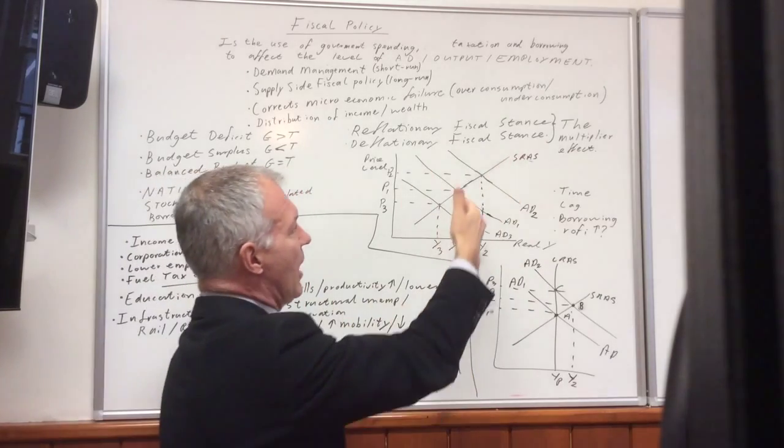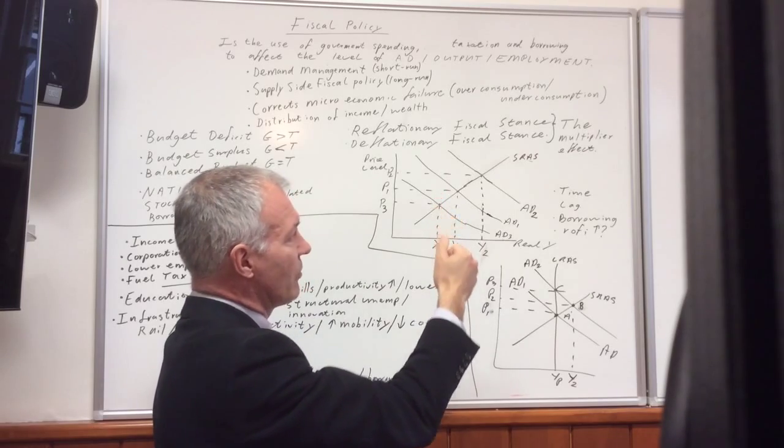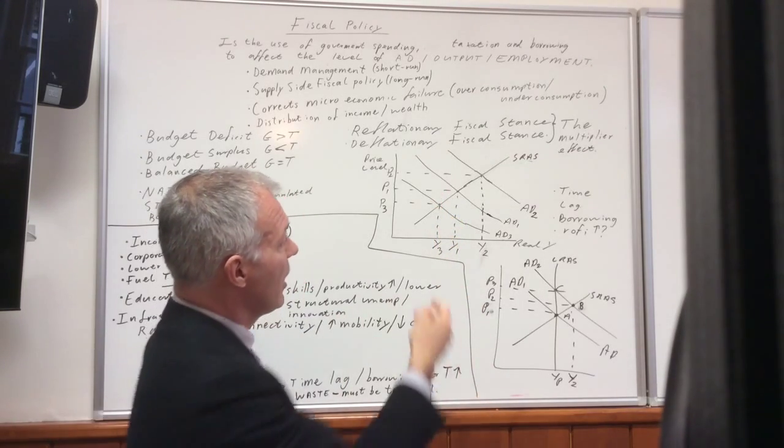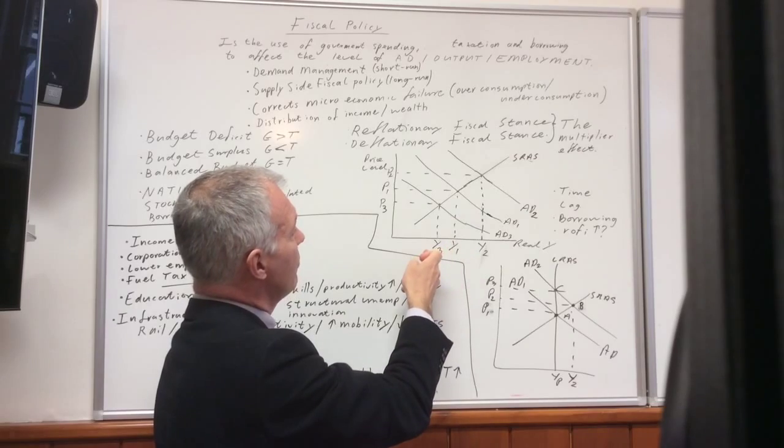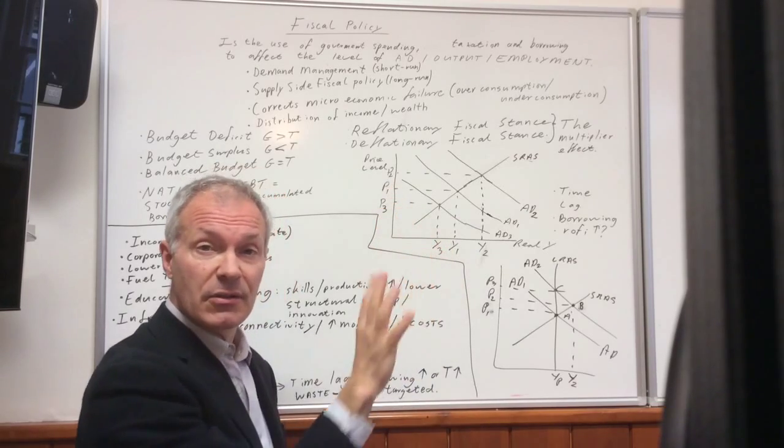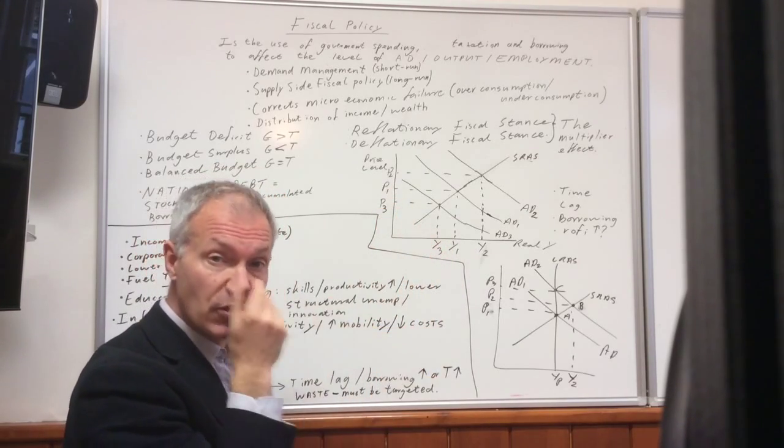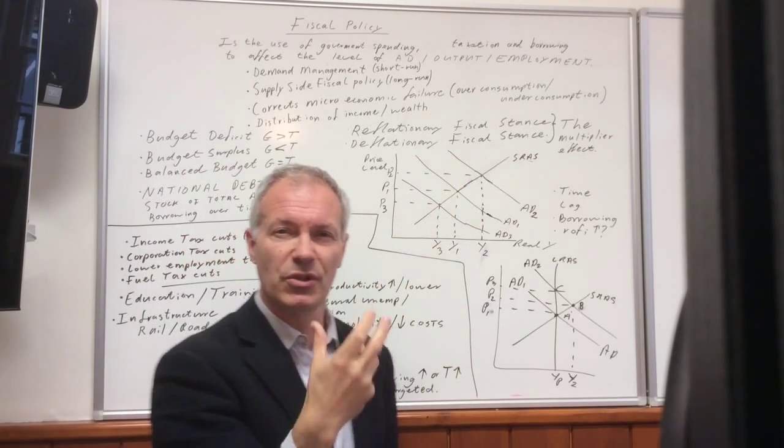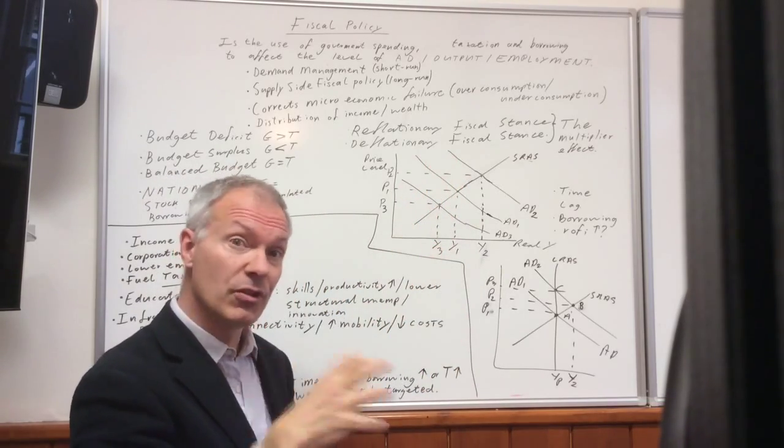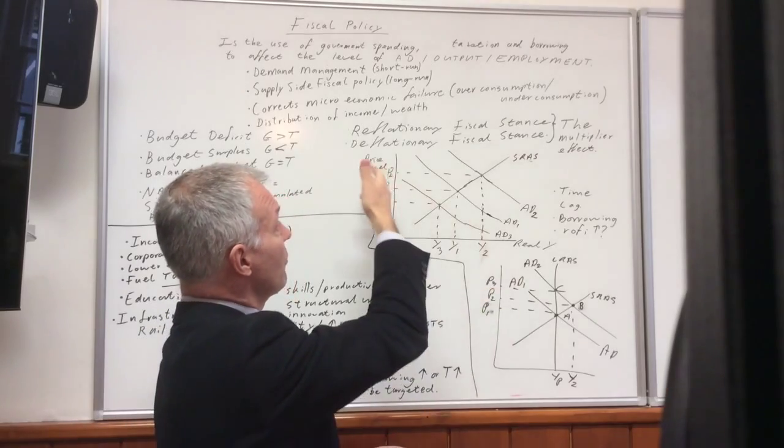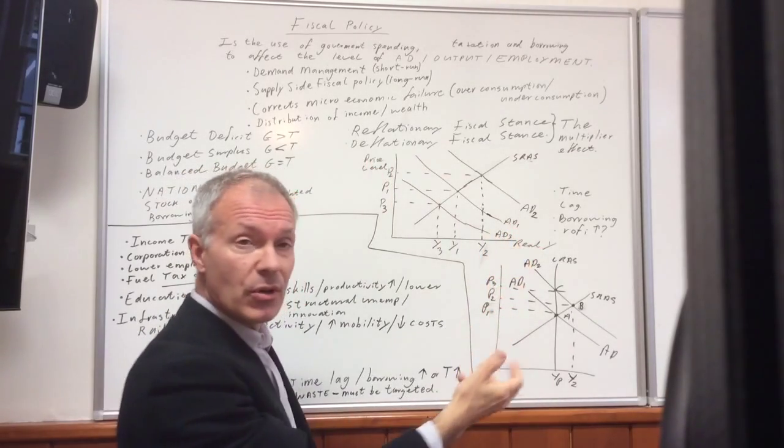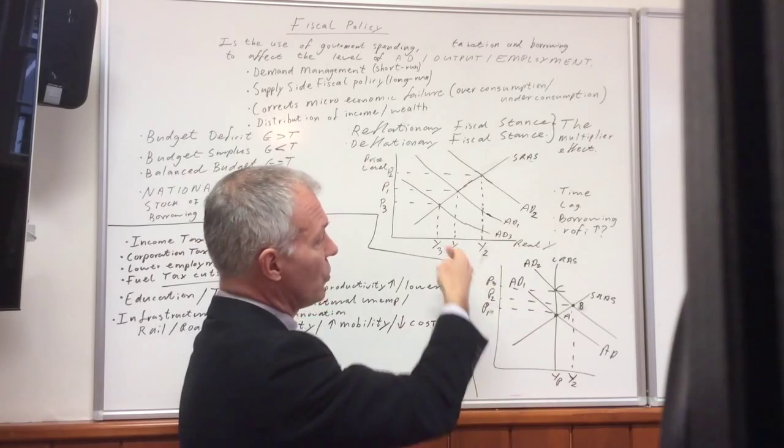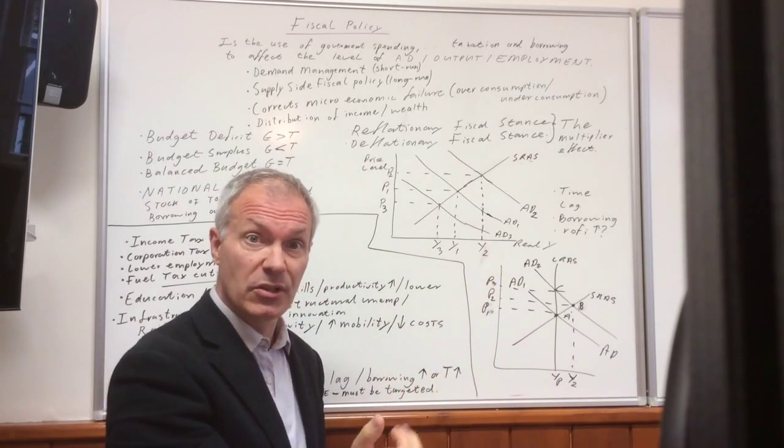If we have a deflationary fiscal policy, the opposite will tend to happen. Aggregate demand will shift to the left. Of course, then we have a negative multiplier process. Output will fall from Y1 to Y3, but we gain from lower inflation. There's a trade-off. Of course, when output goes up, employment tends to increase as well.